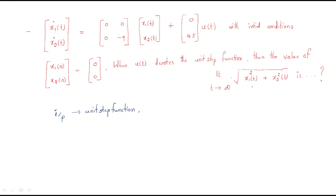The unit step function means u(t) = 1. We need to find the value of √(x1(t)² + x2(t)²) as t → ∞. The procedure is the same as the previous problem.